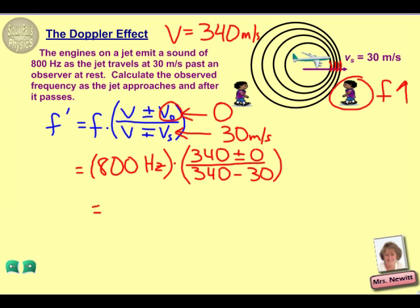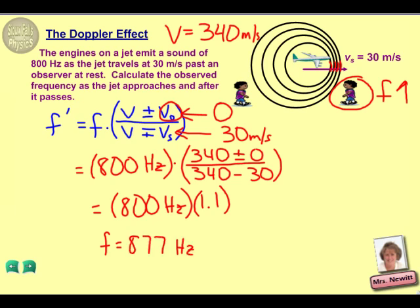That way, we'll end up with a higher value on top of the fraction. And, in fact, if we work out the value of that fraction, we find that the entire ratio now turns out to be approximately 1.1. And, if we get our exact values, we find a new frequency of 877 hertz that is observed by this observer here as the plane approaches him.